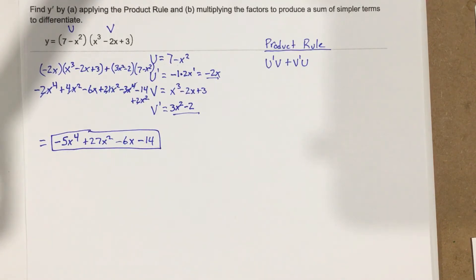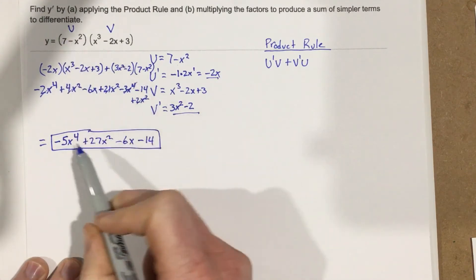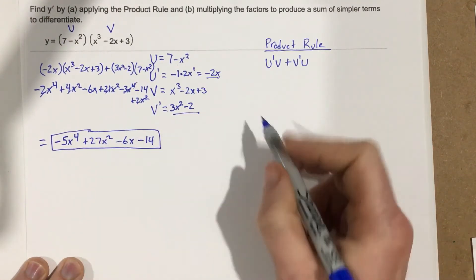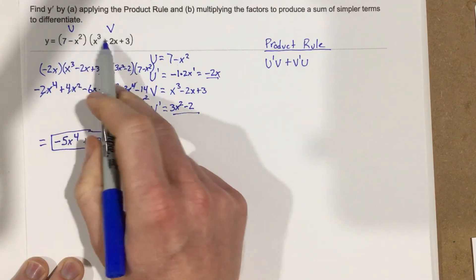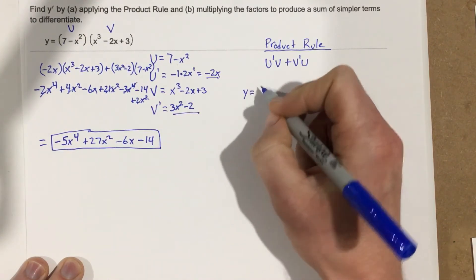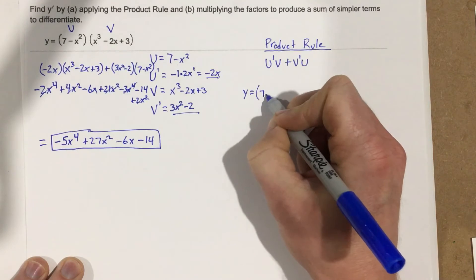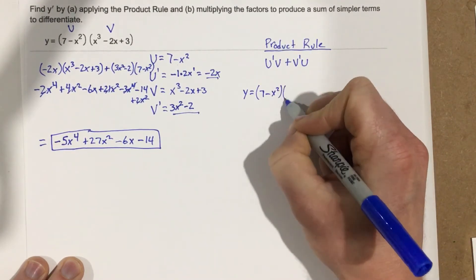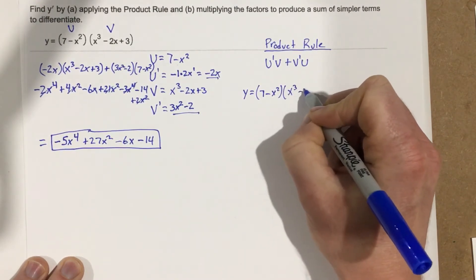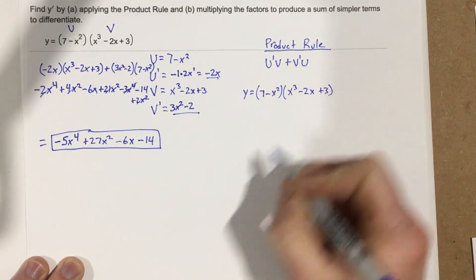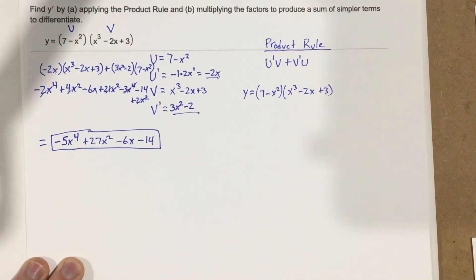Now I'm going to go through and distribute the original function and then take the derivative that way, to see if it matches the product rule result. So let's start with the original function and distribute it out, then take the derivative.